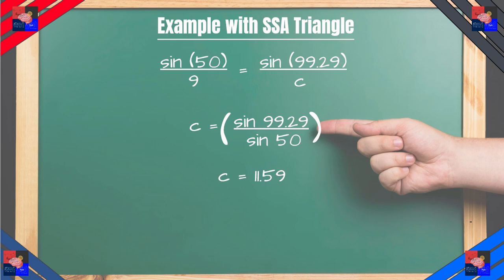So let's use our ratio again. Sine of 50 degrees over 9 is equal to sine of 99.29 degrees over C. And we get 11.59.